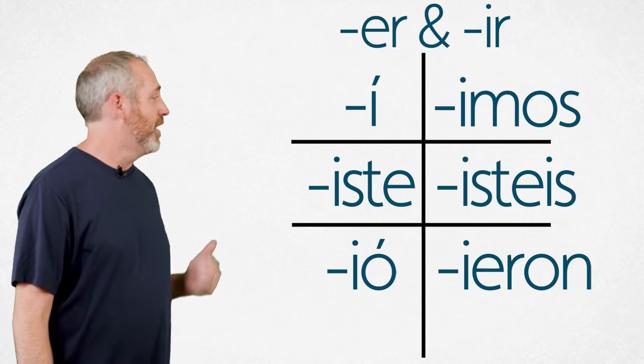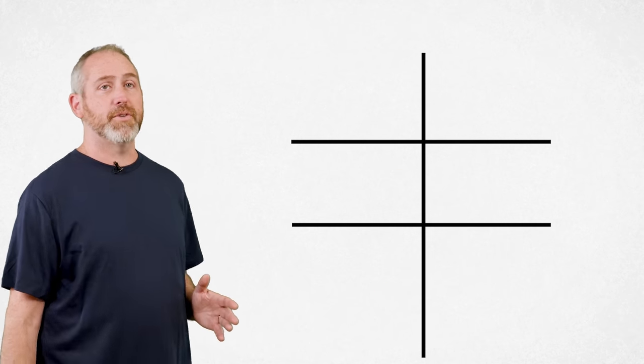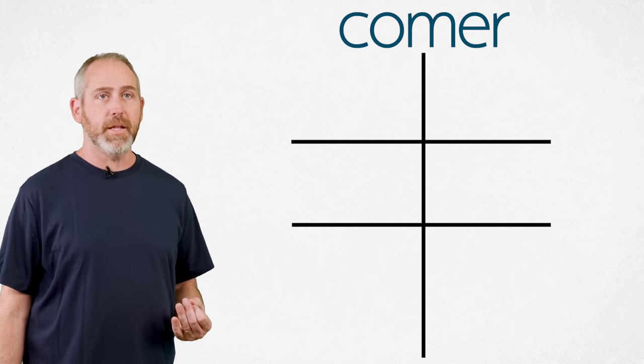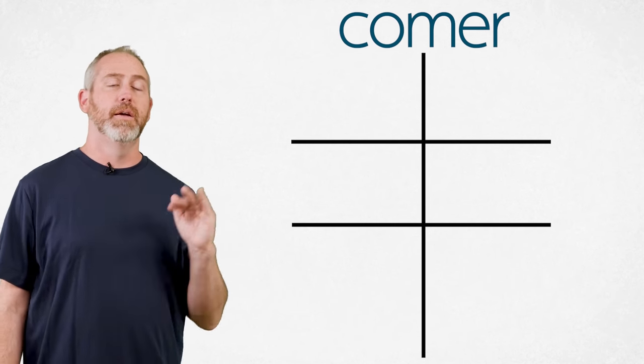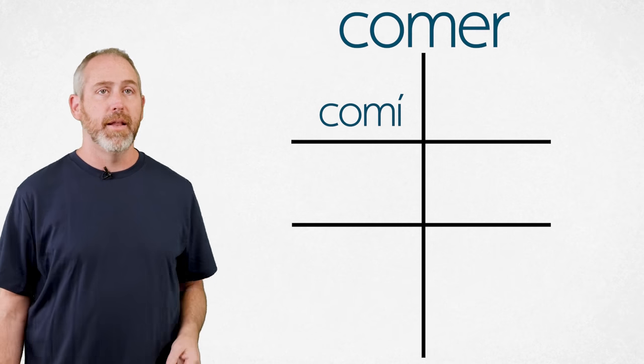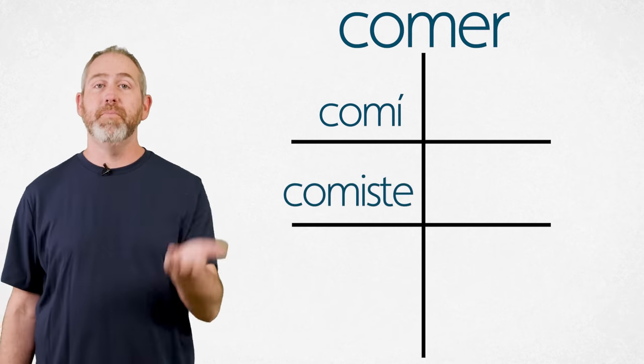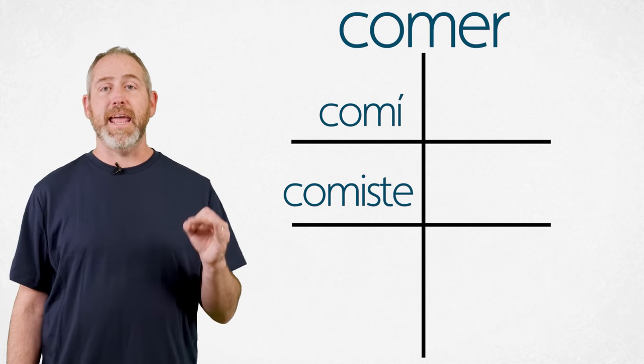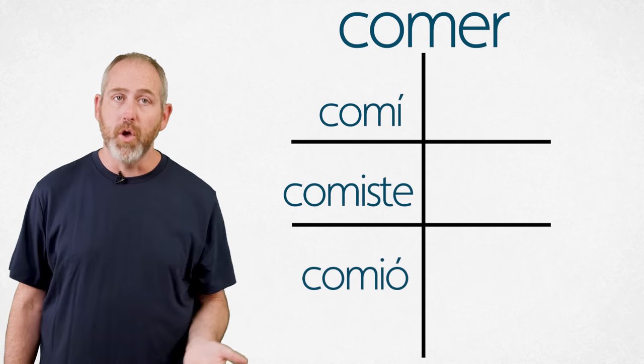Now let's put it into context. Let's start with an ER verb, okay? So if we wanted to take this verb, comer, to eat, let's just walk through. I ate, yo comí. You ate, tú comiste. He, she, or you, formal, ate, él, ella, usted comió.